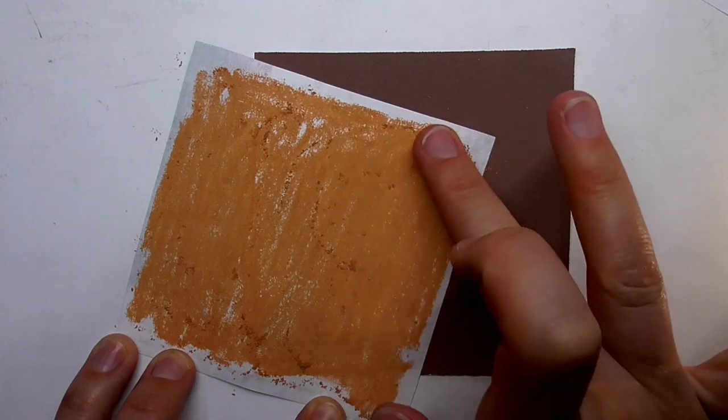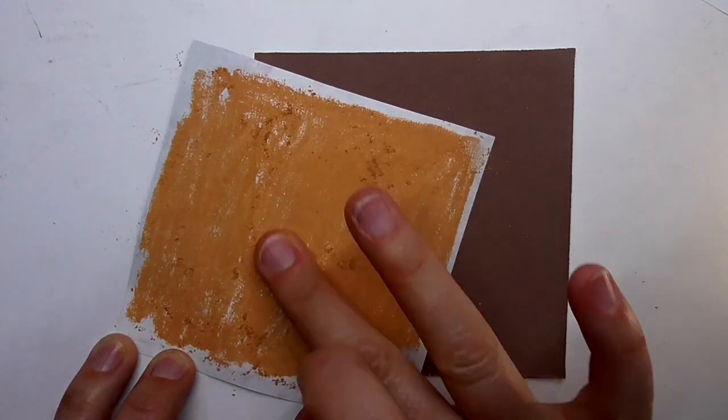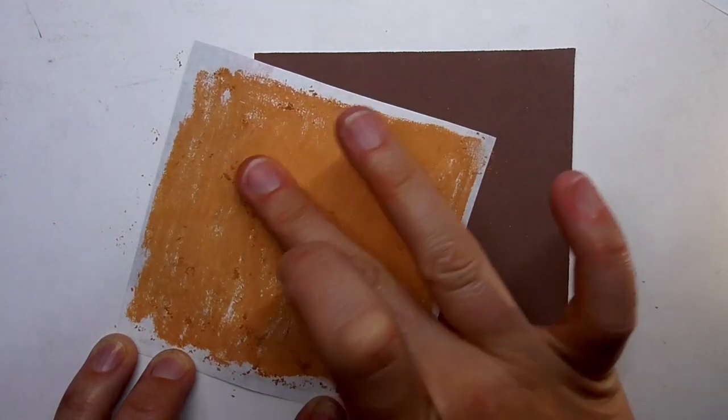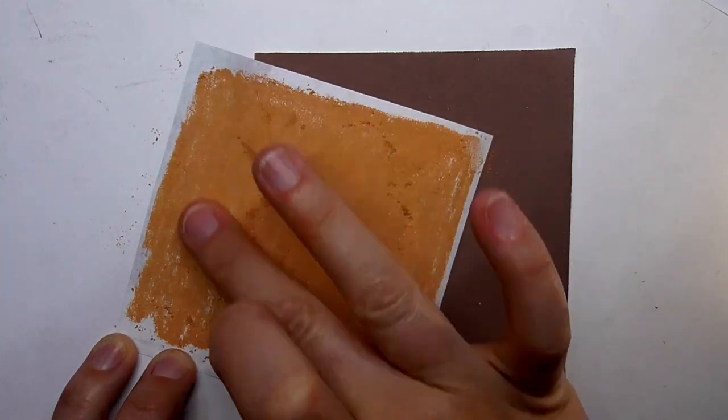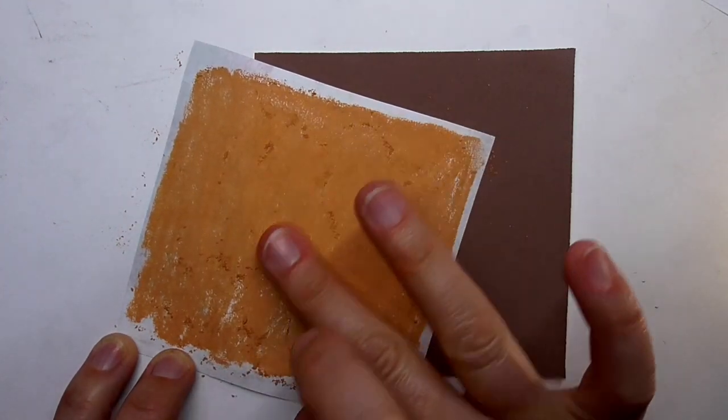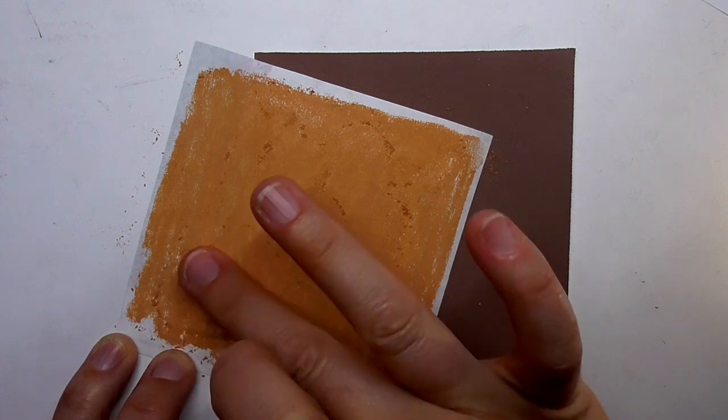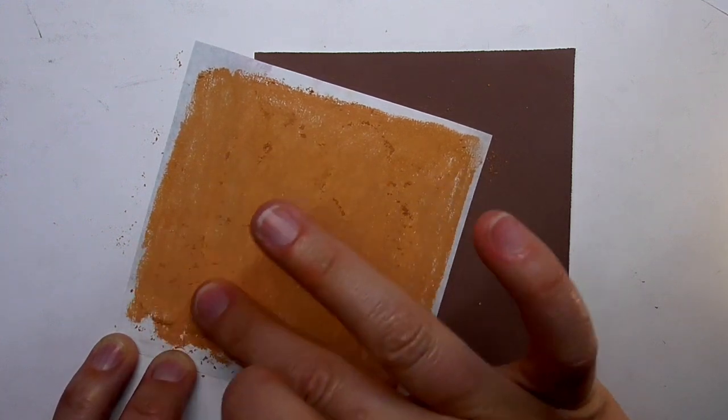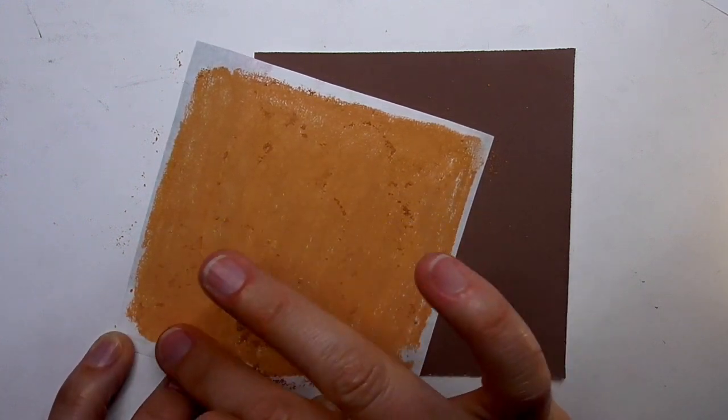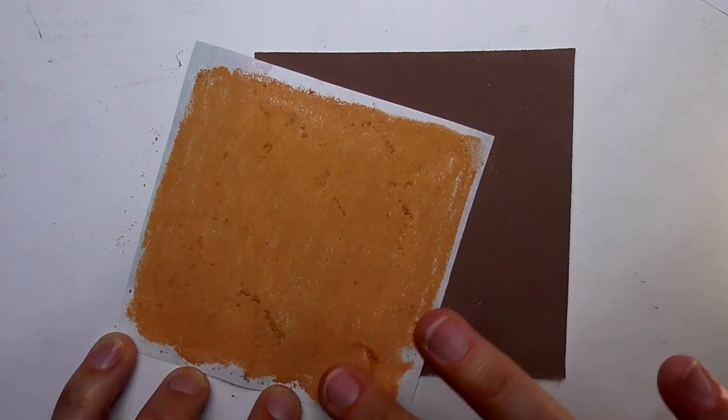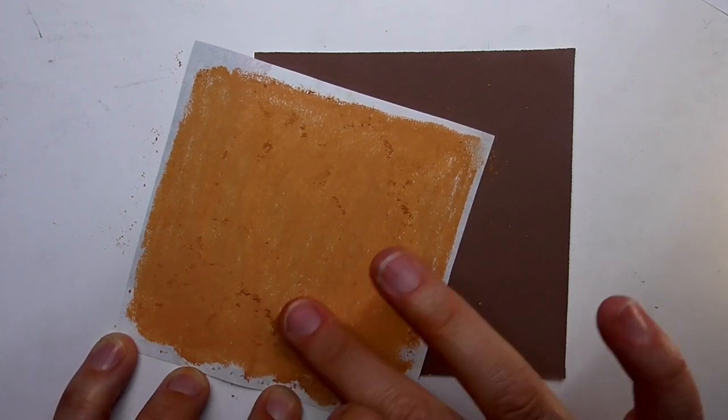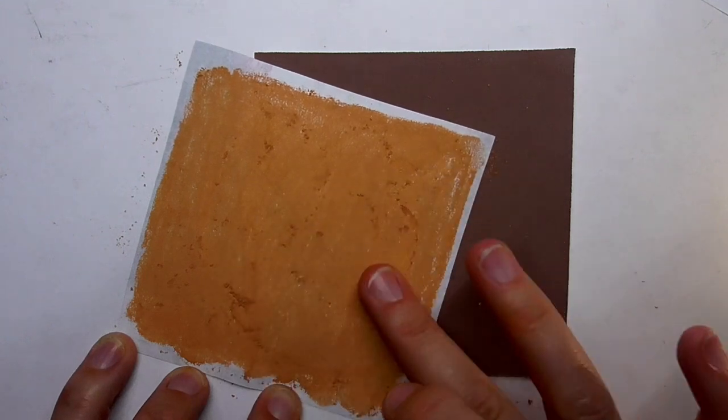Then I go over here with the finger and just, I would say, blend this layer. You see it's normal copy paper. This copy paper doesn't allow you to draw layers, so it's completely different than the pastel mat.